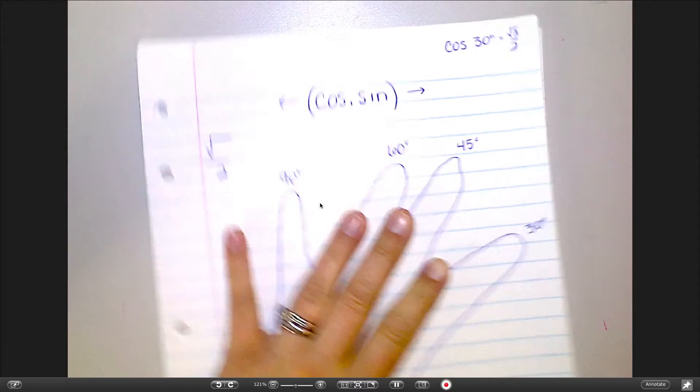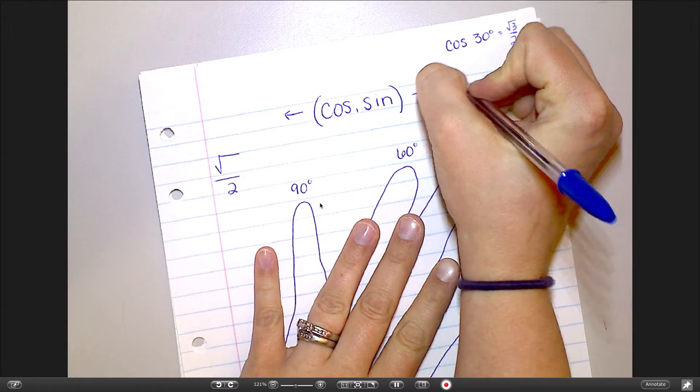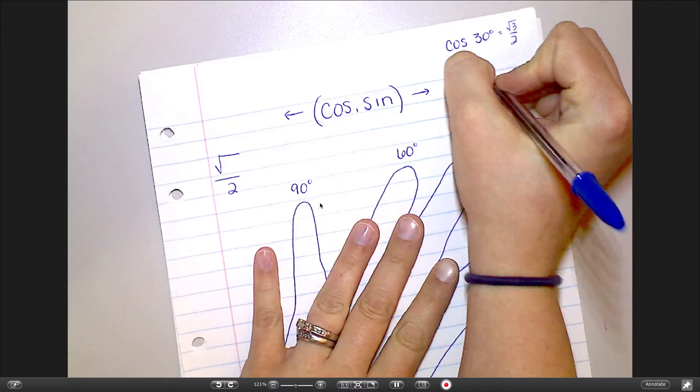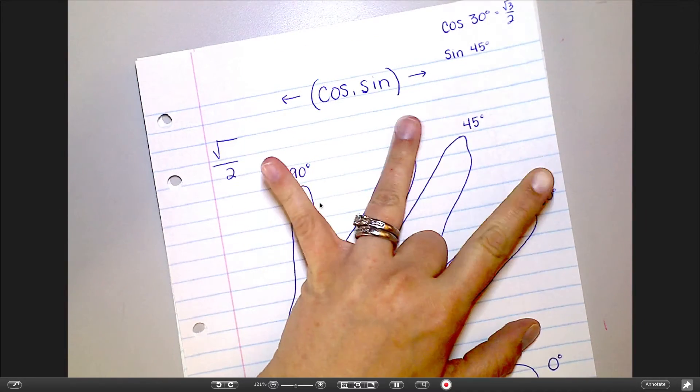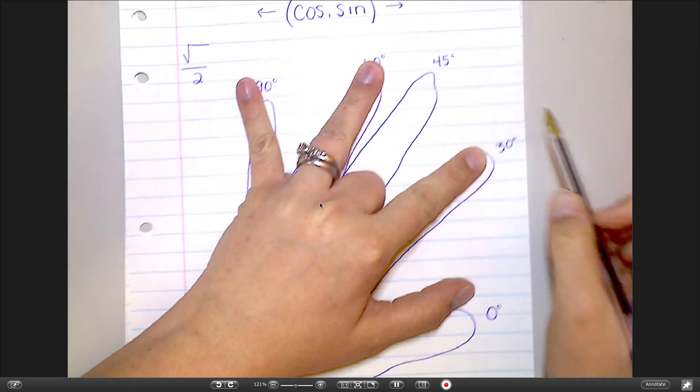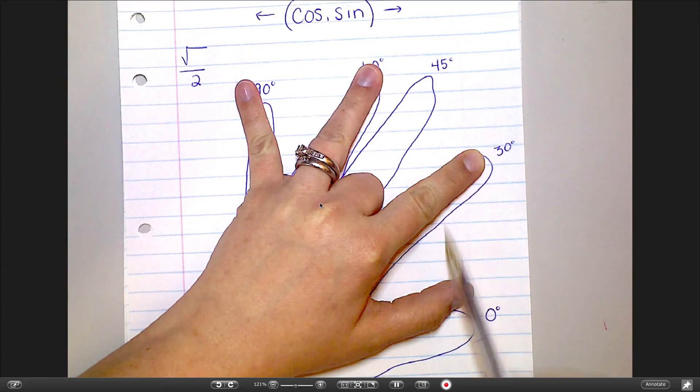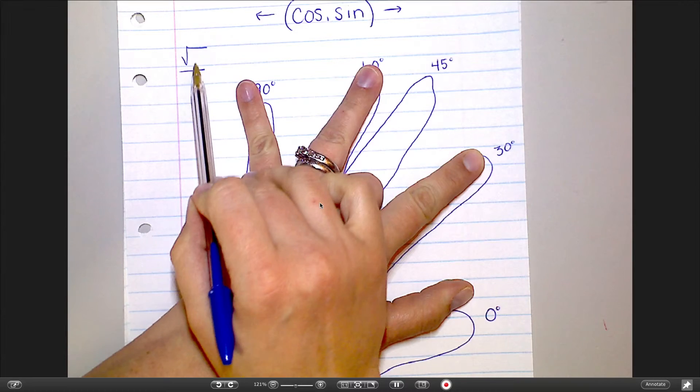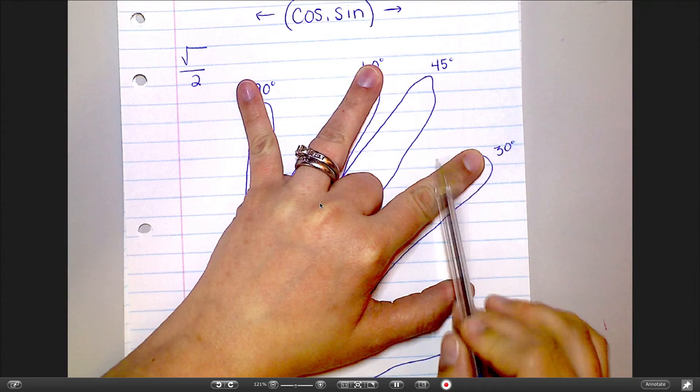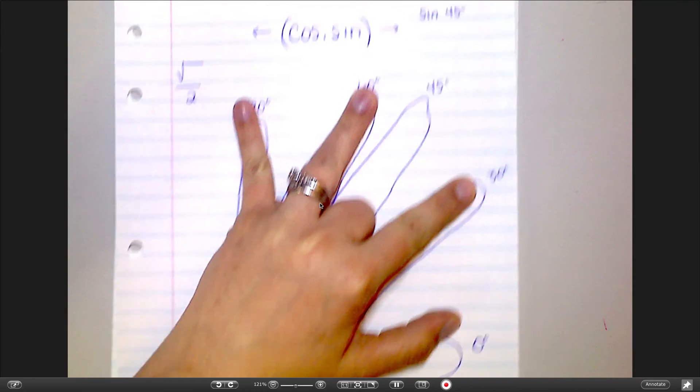Let's say you wanted to find sine of 45. Well, here's 45 degrees. And sine, we said, was on the right-hand side, so I have 1, 2 left on the right. So, sine of 45 would be square root of 2 over 2, because I have 2 left over here.